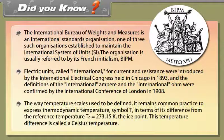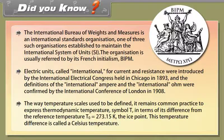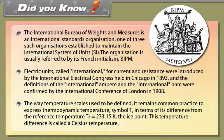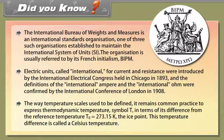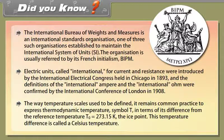The way temperature scales used to be defined. It remains common practice to express thermodynamic temperature, called T, in terms of its difference from the reference temperature T0 equals 273.15 Kelvin, the ice point. This temperature difference is called a Celsius temperature.